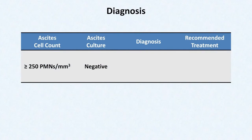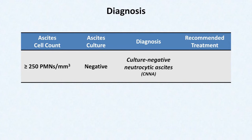In addition to what's presented in this algorithm, there are two additional diagnostic categories of which you should be aware. First, there is the situation in which there are at least 250 PMNs but the culture is negative. This actually has a more specific name: culture-negative neutrocytic ascites, often abbreviated CNNA. Since it's a form of SBP, you should treat it as SBP.